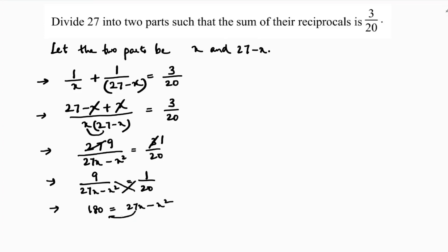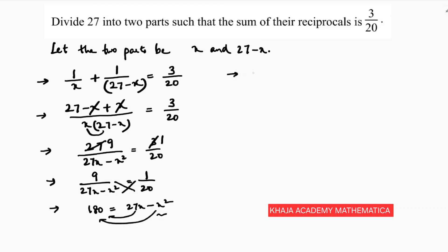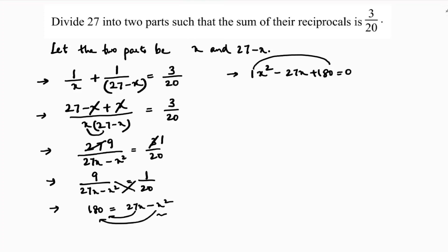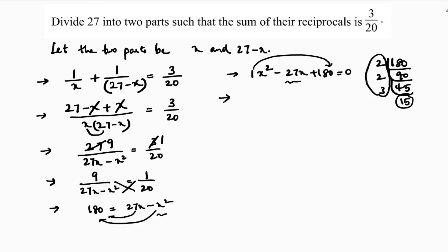Bringing all terms to the left-hand side — since x squared is negative on the right, it becomes positive on the left — we get x squared minus 27x plus 180 equals 0. The coefficient of x squared is 1, so 1 times 180 is 180. We need to split the middle term 27 using factors of 180: checking 12 times 15 gives 180 and 12 plus 15 equals 27, so we write x squared minus 12x minus 15x.